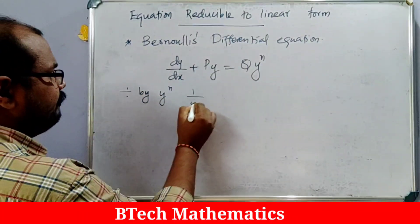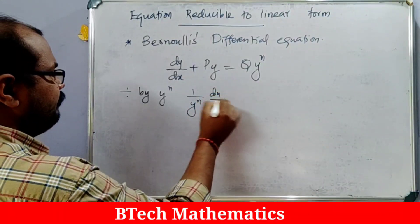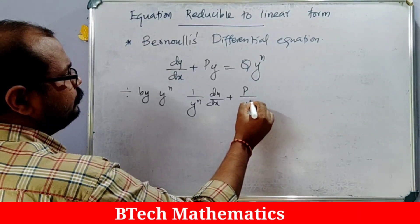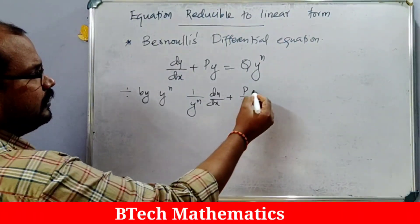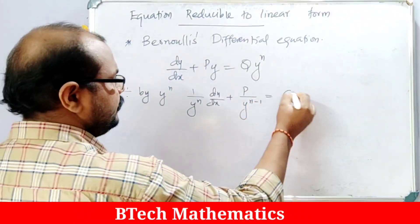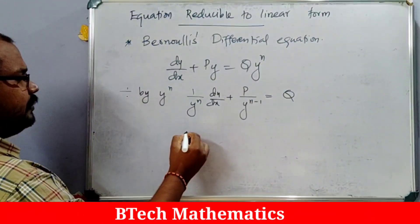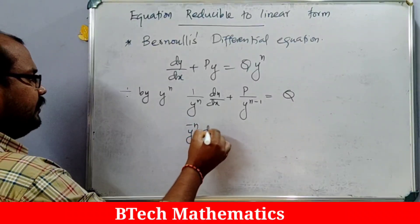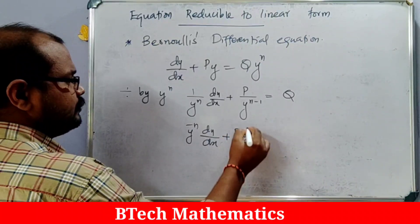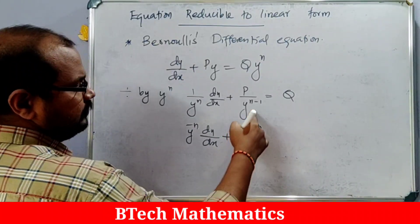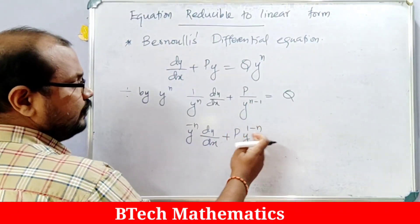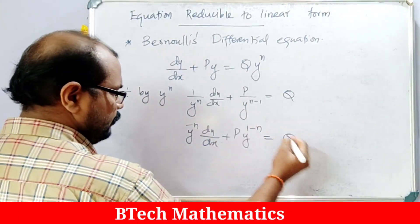After dividing by y^n we get: (1/y^n)(dy/dx) + P·(y/y^n) = Q, which simplifies to y^(-n)(dy/dx) + P·y^(1-n) = Q. Taking y^n to the numerator makes the exponent negative: negative of (n-1) is (1-n), giving us the equation equal to Q.